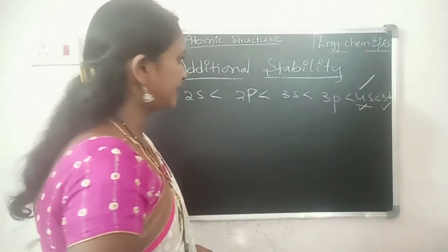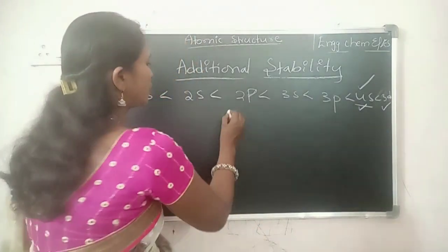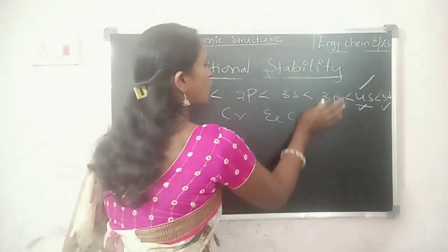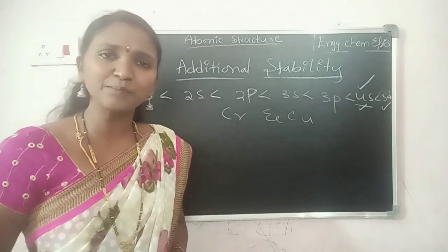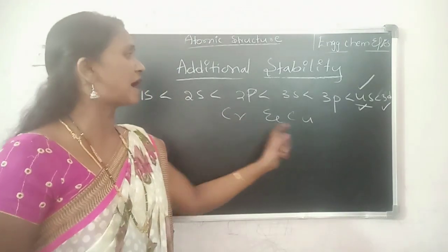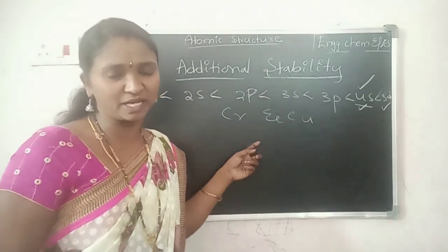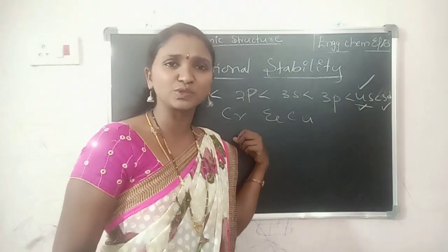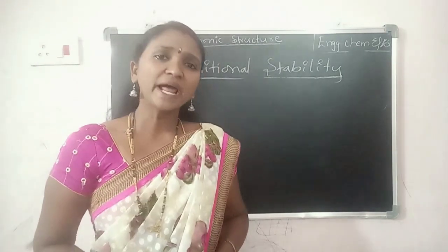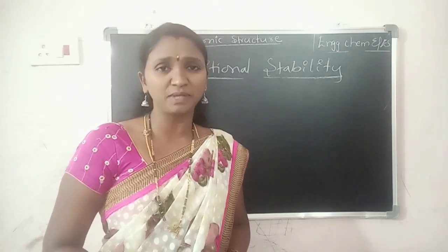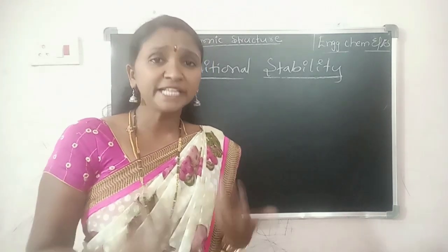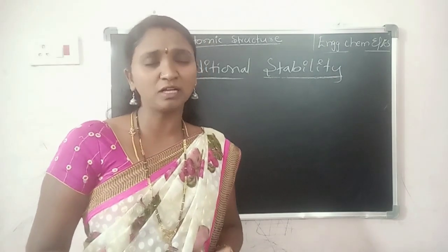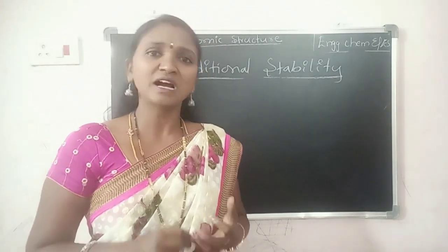Let us take an example of chromium and copper, to see how these atoms get additional stability. An atom gets additional stability when the degenerate orbitals are either half filled or completely filled.